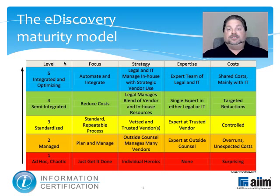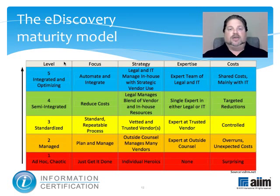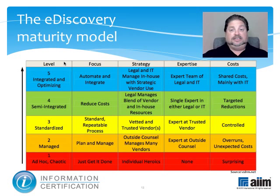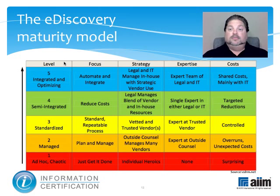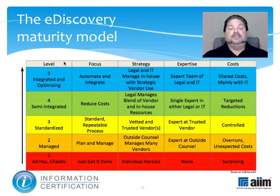Rounding out the picture, here is an eDiscovery maturity model which documents the evolution of organizational eDiscovery strategy used to respond to litigation or regulatory demands. It has the standard five levels that range from ad hoc and chaotic at the early stages to degrees of optimizing at the more mature stages. Besides gauging the different levels of process maturity, movement through the levels also represents the acceptance and incorporation of eDiscovery as a necessary business process.